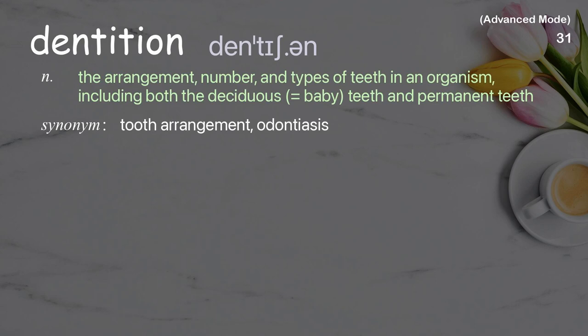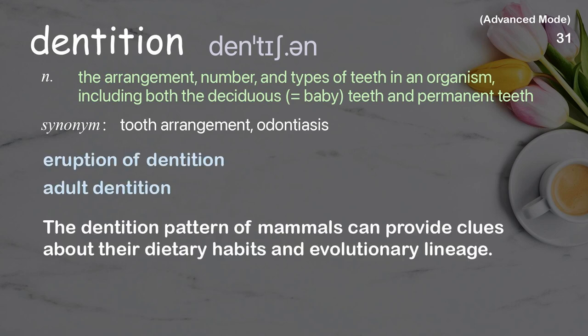Dentition: the arrangement, number, and types of teeth in an organism, including both the deciduous (baby) teeth and permanent teeth. Examples: eruption of dentition; adult dentition. Example sentence: The dentition pattern of mammals can provide clues about their dietary habits and evolutionary lineage.